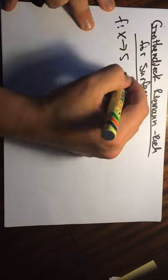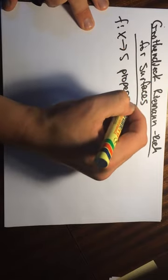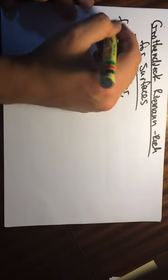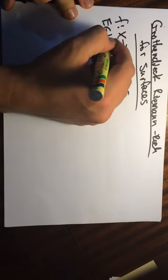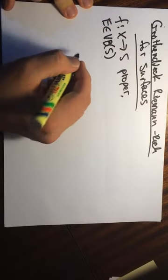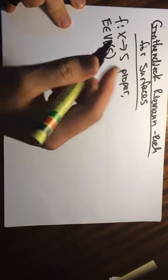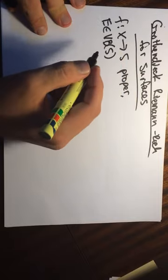So we have a proper morphism of schemes. We have a vector bundle on S. And then we have these Chern characters, and we have the Todd class.